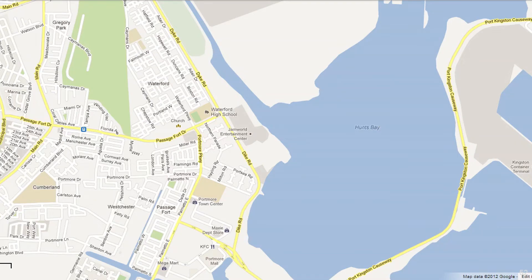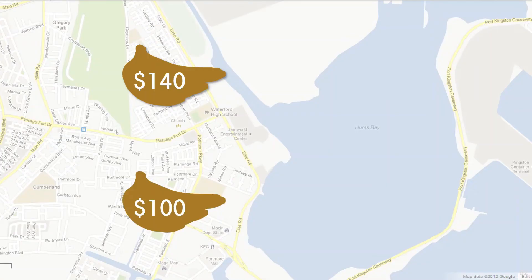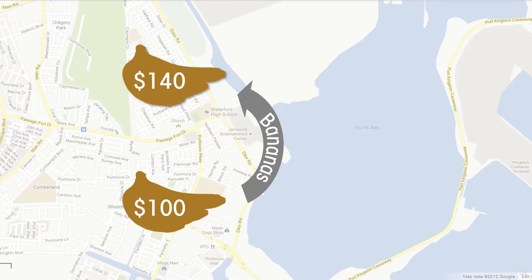Suppose you found out that bananas are selling for more in one community, Waterford, than they are in a neighboring community, Passagefort. Well then you can make some money. You can buy bananas in Passagefort, walk them up to Waterford, sell them for the greater amount, get back your initial amount plus the profit, walk back down to Passagefort, buy some more bananas and keep going until that price difference goes away.